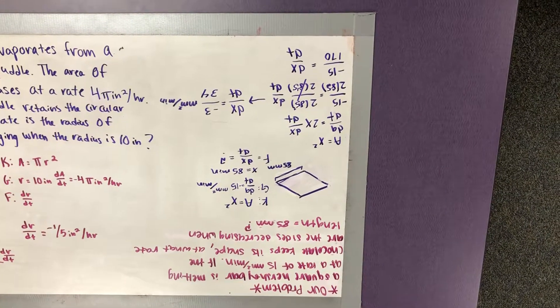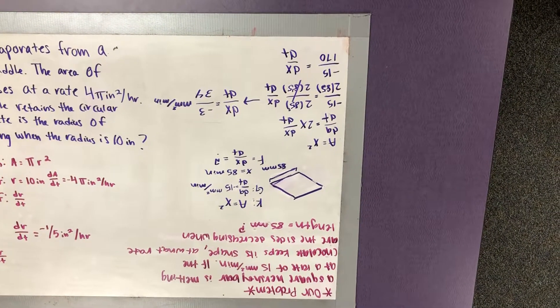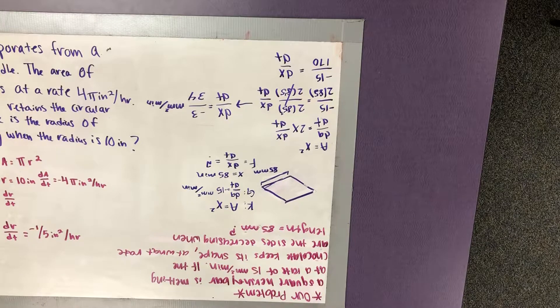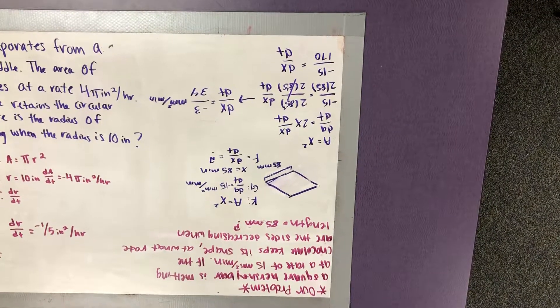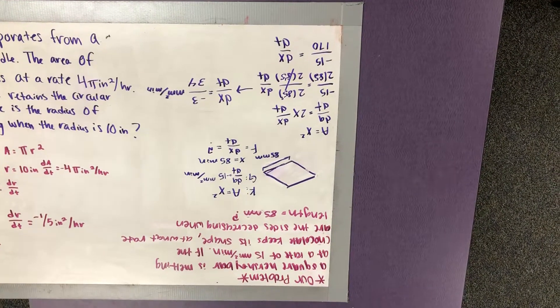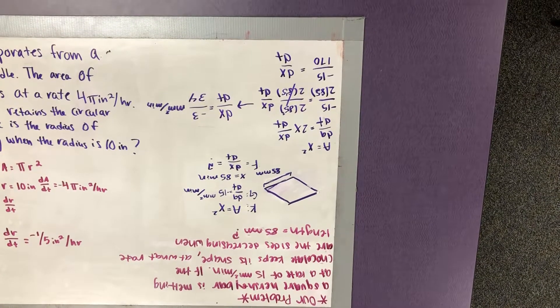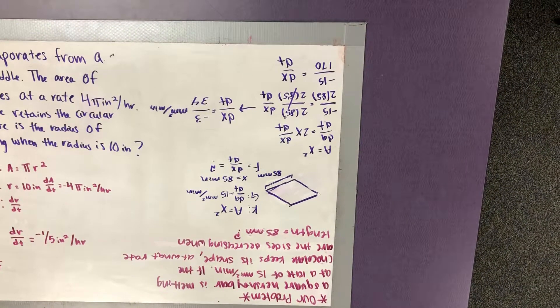And then after that, we put in negative 15 for our dA over dt, because that is what we're trying to look for. And then we put it equal to 2 times 85. We got 85 from the side, from the length.